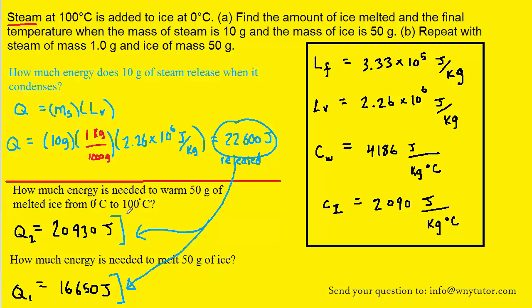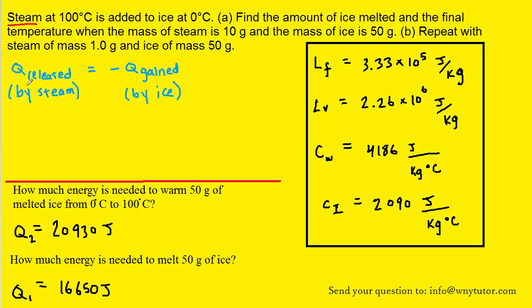So to proceed, let's consider the following. We know from the conservation of energy that any heat energy released by the steam is going to be gained or absorbed by the ice. And we just have to make sure that we include a negative sign in the equation because remember that released energy is strictly a negative quantity. So we would not be able to set a negative quantity equal to a positive quantity. We have to make sure to maintain an energy balance by sticking a negative sign into the equation.